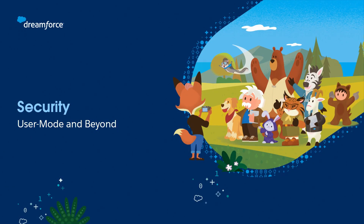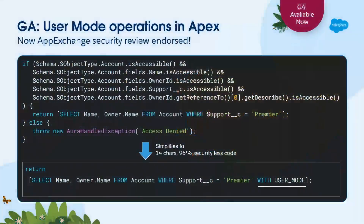So first, Chris, can you take us through security? Hopefully you're all familiar with user mode database operations in Apex at this point. They let you take the traditional ugly mess of describe calls - frankly I found it embarrassing - that we see on the top of the code here, and turn it into what we have on the bottom. 96% less security code, if I want to cherry-pick some great statistics.